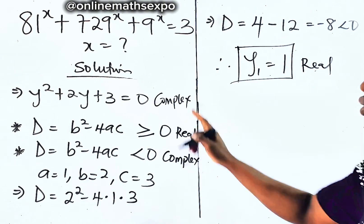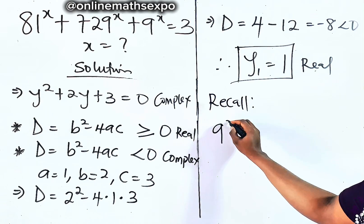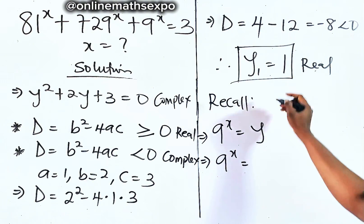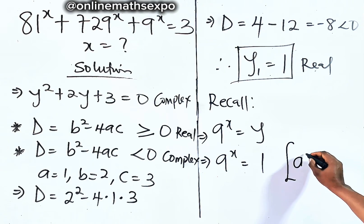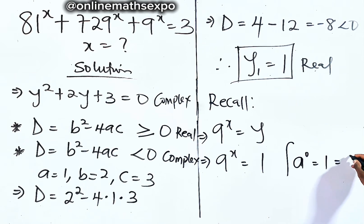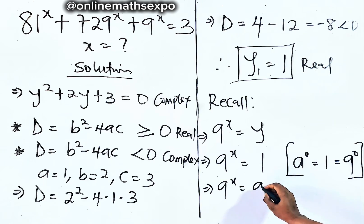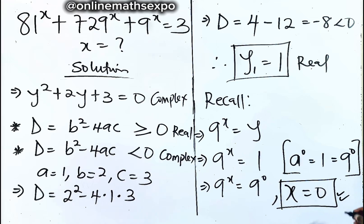Now let's use y equals 1 to find the value of x. Recall we set 9 to the power of x equal to y. Replacing y with 1, we have 9 to the power of x equals 1. By the exponent rule, any number raised to the power of 0 equals 1, so 1 is the same as 9 to the power of 0. Therefore, 9 to the power of x equals 9 to the power of 0. The bases are the same, so the powers must be equal: x equals 0.